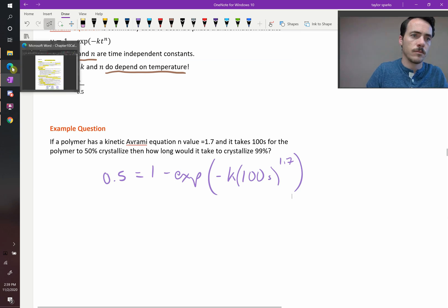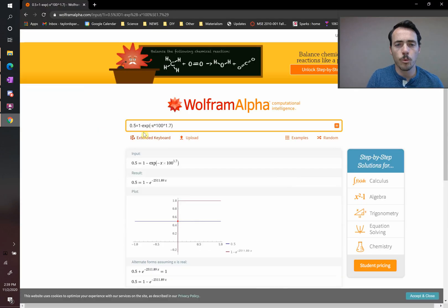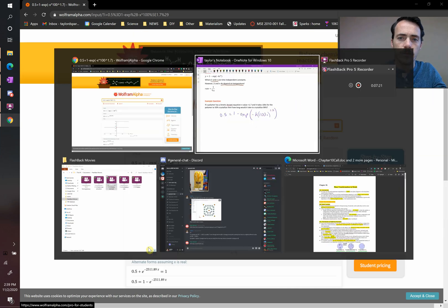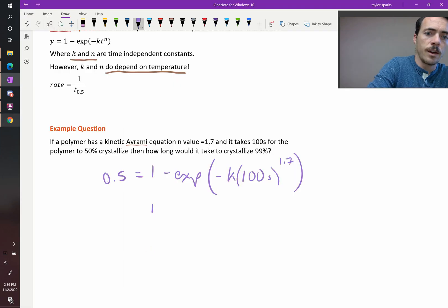Let's go ahead and do so. All right, when I plug that into Wolfram Alpha, I can solve for X, our K value, and it's equal to 0.000275. So K is equal to 0.000275. Now that we know K and N, we can solve for the amount of time necessary to crystallize to any arbitrary amount, including 99%.